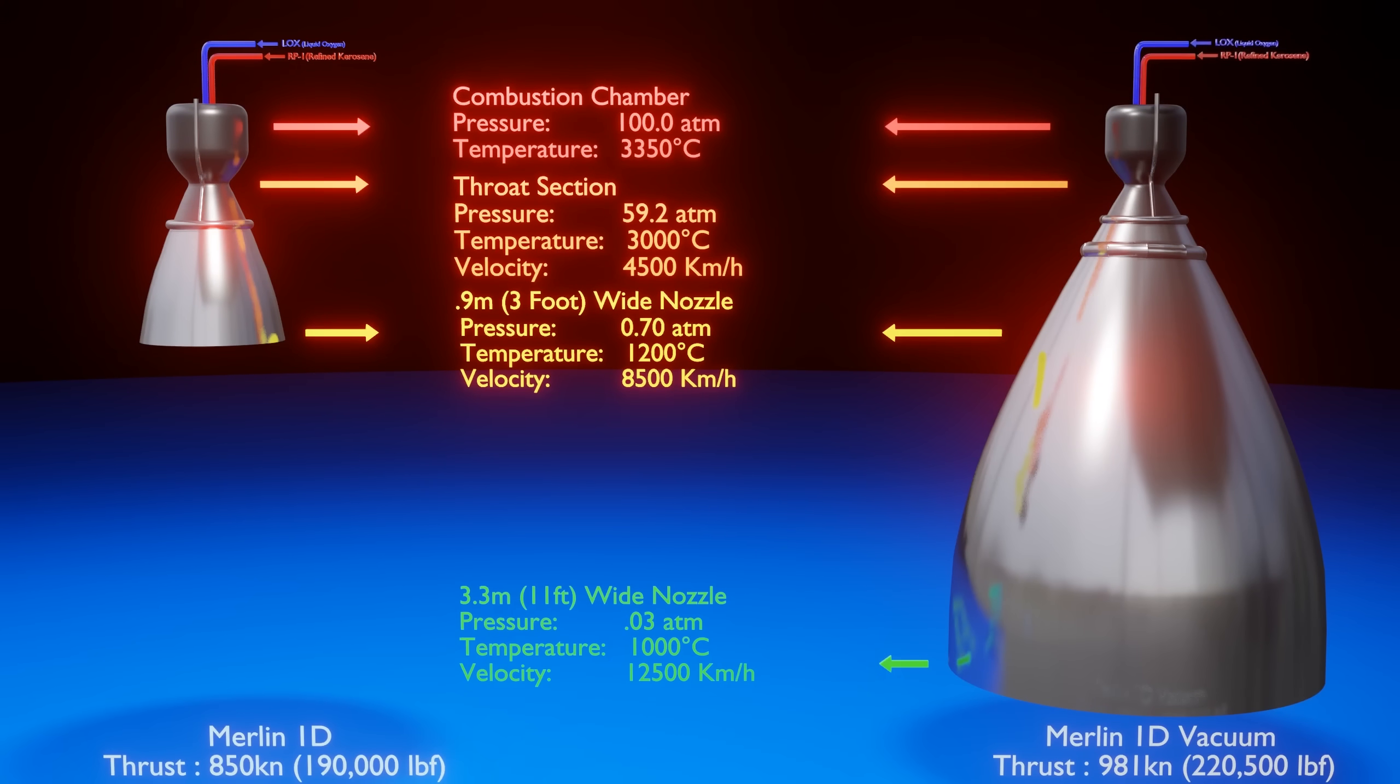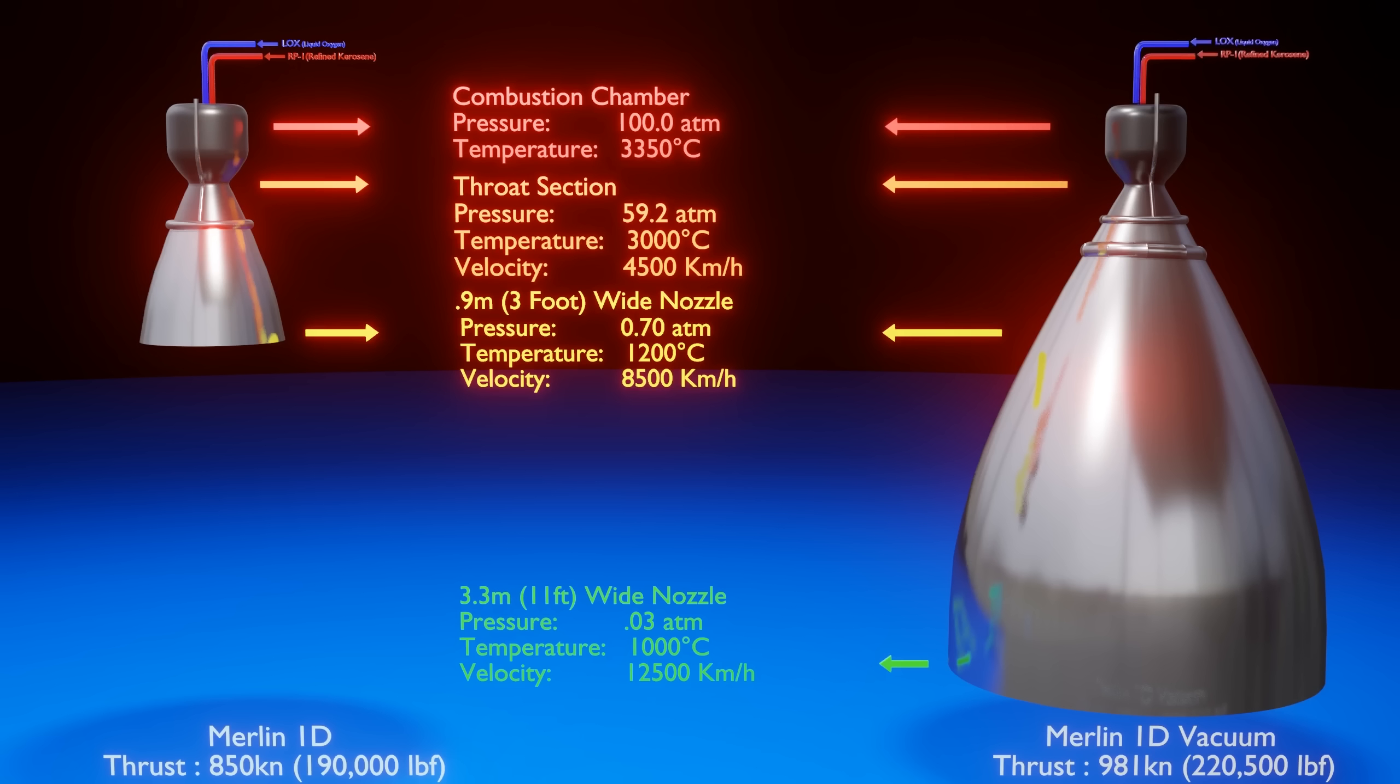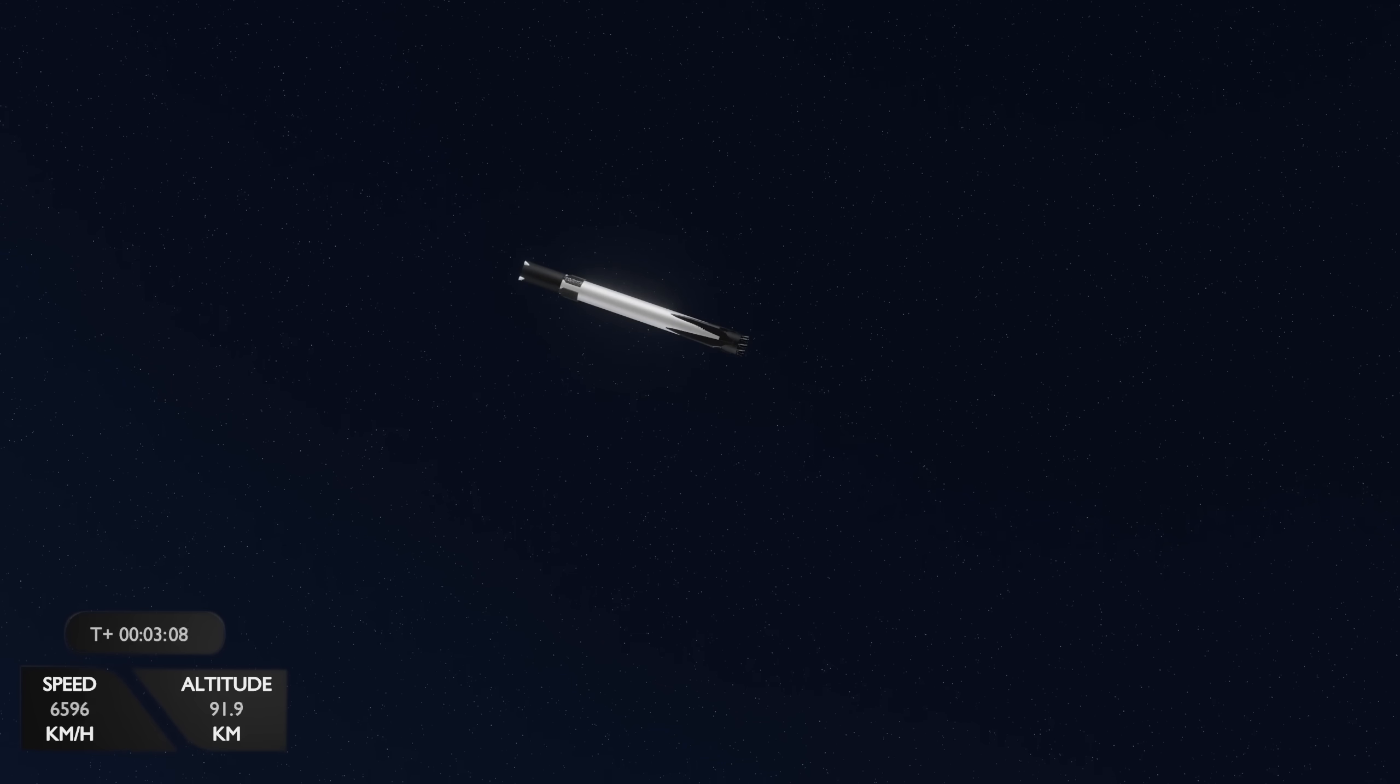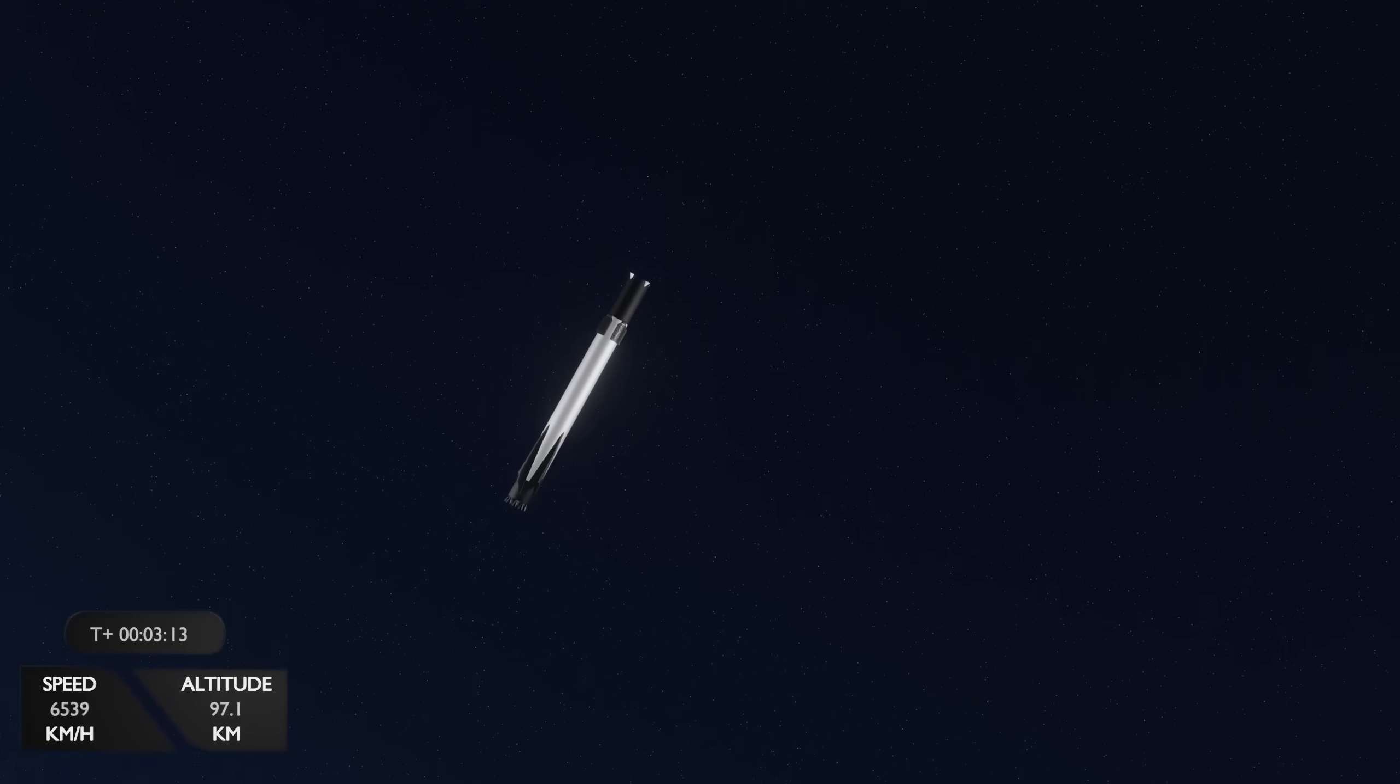Remember how an optimally designed engine has an exhaust pressure that equals the ambient air pressure. Well, operating in the near-perfect vacuum of space, this means the nozzle cannot be large enough. Therefore, the size of the nozzle on the second stage is limited by weight and size at a massive 3.3-meter-wide nozzle. As the second stage continues to accelerate to achieve orbital velocity, the first stage will begin to orient itself into a controlled fall back to Earth, using its nitrogen thrusters, grid fins, and later its engines to slow its descent.